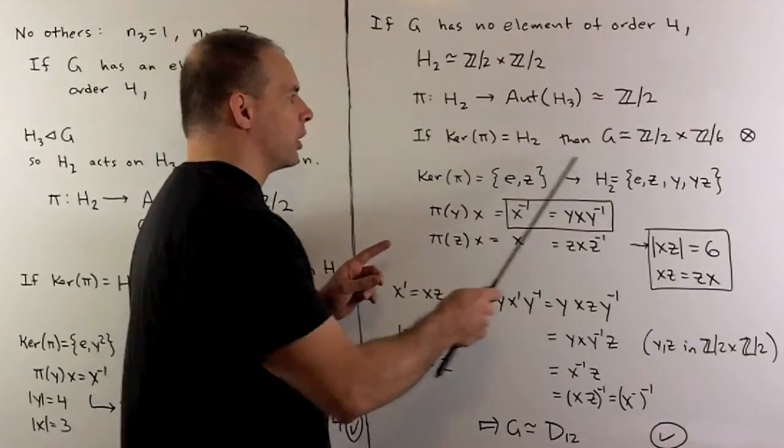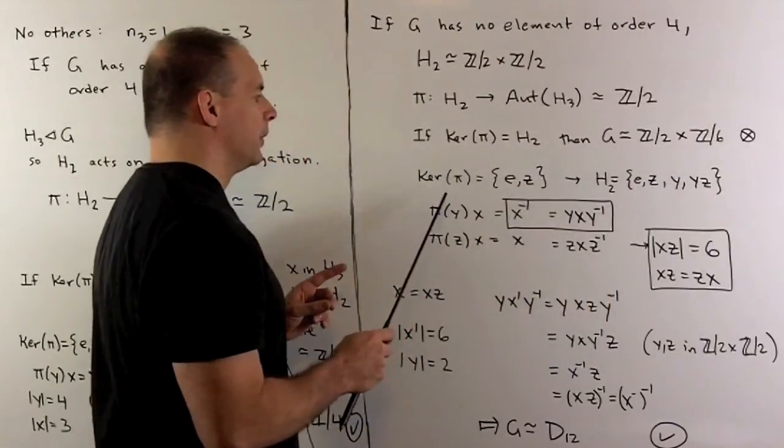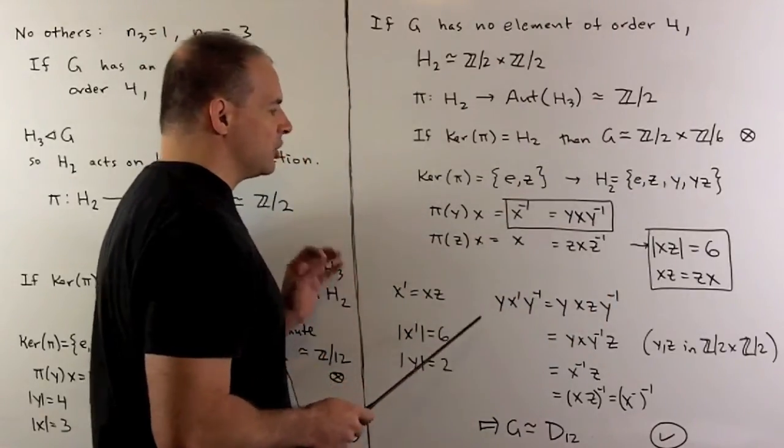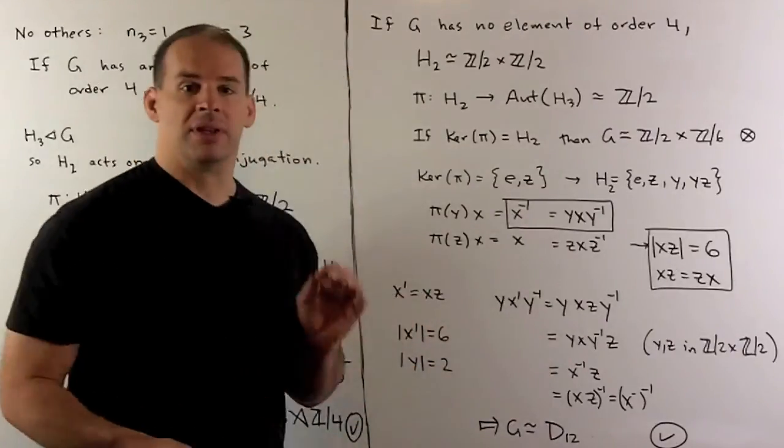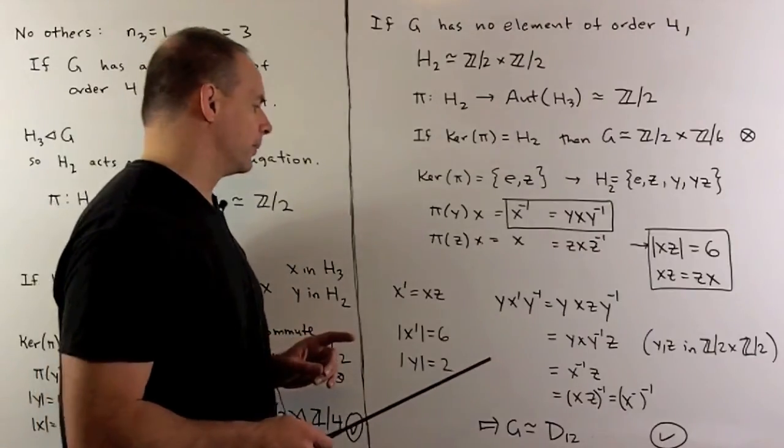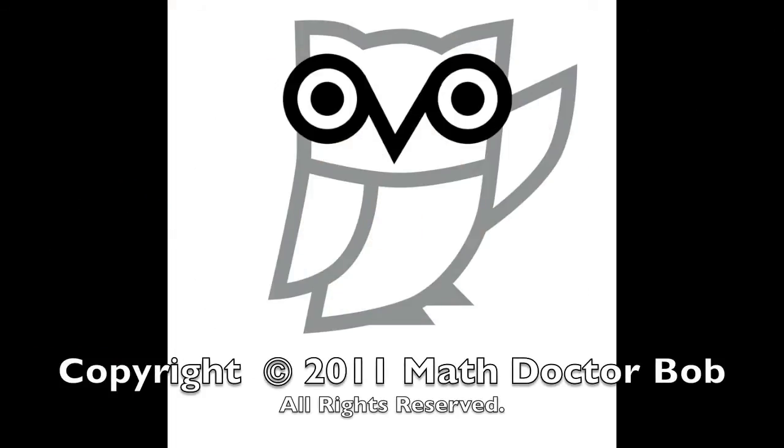That's going to be enough. As you work your way through, you'll see that you have enough to get the generators and relations for the D12. So, the symmetries of the regular hexagon. Thank you.